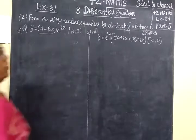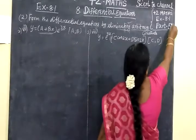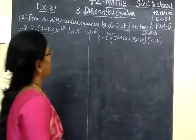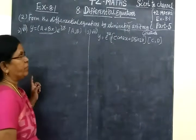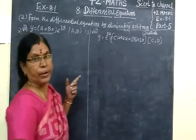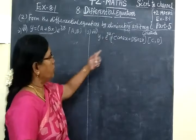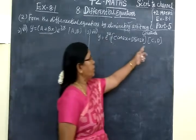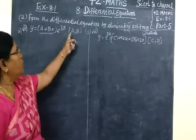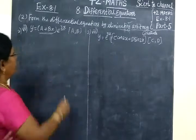Good evening. Today we see Part 5 — forming differential equations by eliminating arbitrary constants. In the question, the arbitrary constants are A and B.